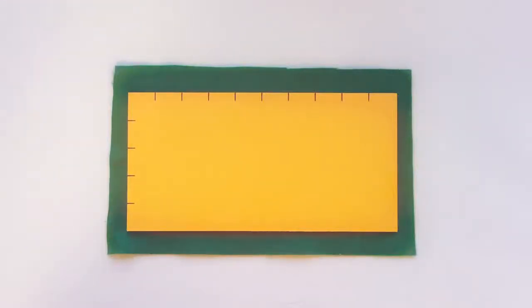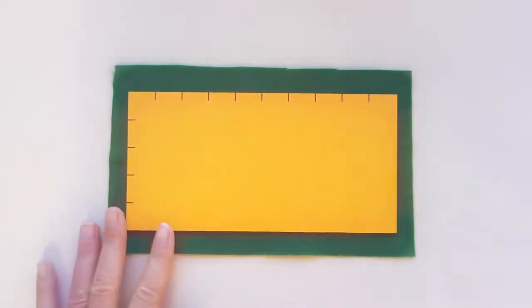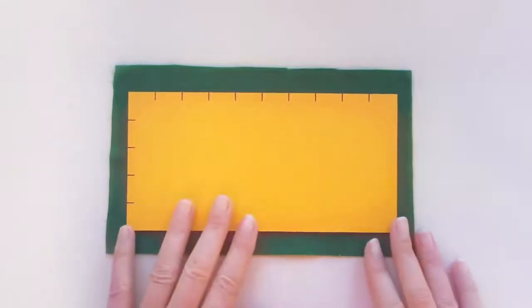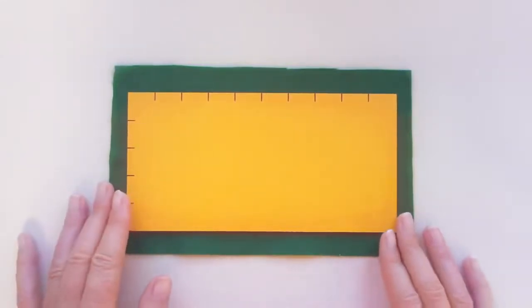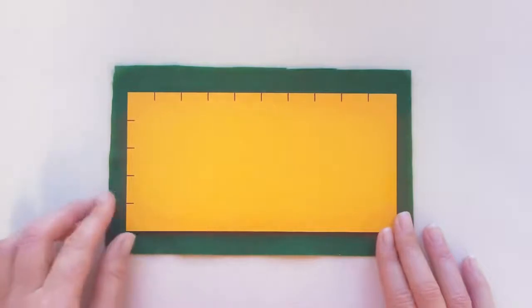Today's lesson is the second lesson on area and it is introducing the yellow material. I have a figure here, or a shape. What is this shape called? It's called a rectangle.